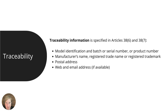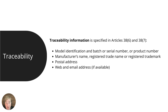Traceability is another set of labeling requirements that's already part of products that need to be CE marked, so it's not new in any way. If you're selling electronic devices today, you should be familiar with this — it's just that now it also applies to the battery. You're looking at model identification, batch or serial number, product number — essentially to identify the product, but also the specific batch, so in case you need to issue a recall, you can trace not just the product but the specific production run. Manufacturer name, registered trade name, registered trademark, postal address, web and email address if available — as referenced in Article 38, parts 6 and 7.